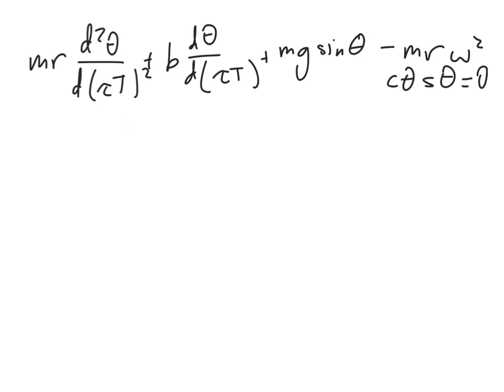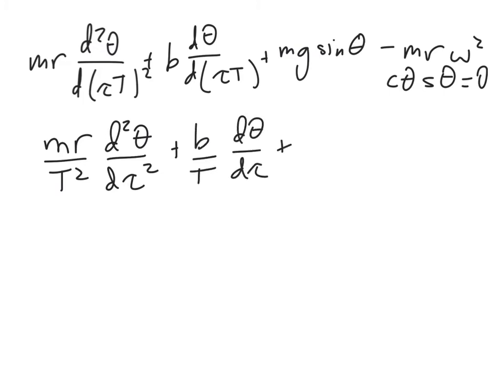So we're going to sort this out. We have mr/T² d²θ/dτ², plus b/T dθ/dτ, plus our other two terms, equals zero.